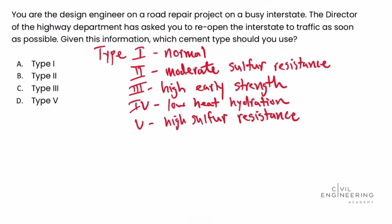Looking back at the problem statement, the highway department director has asked us to reopen the interstate as soon as possible. To accomplish this goal, we have to use materials that allow us to open the interstate to traffic quickly. That means using Type III cement, because it has high early strength — a shorter time required to harden — allowing us to open the road to traffic sooner than with Type I normal cement.